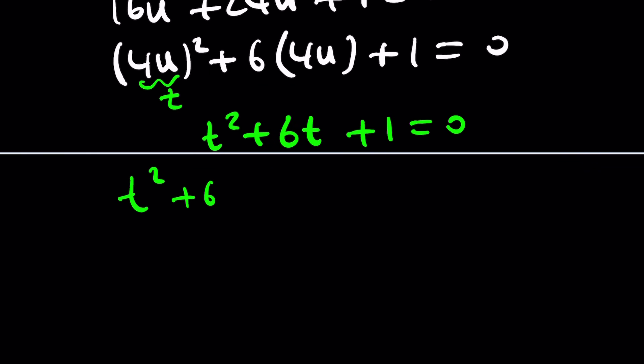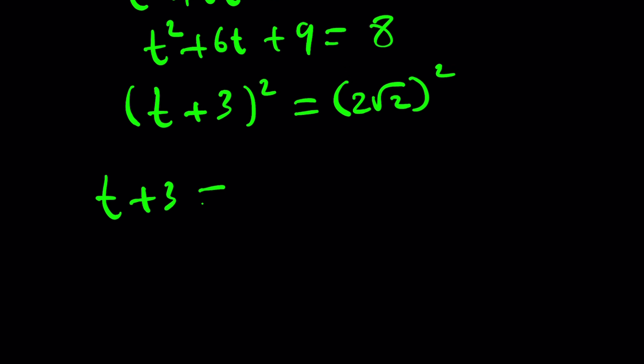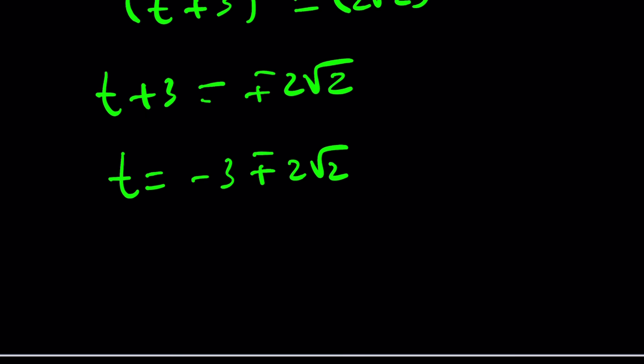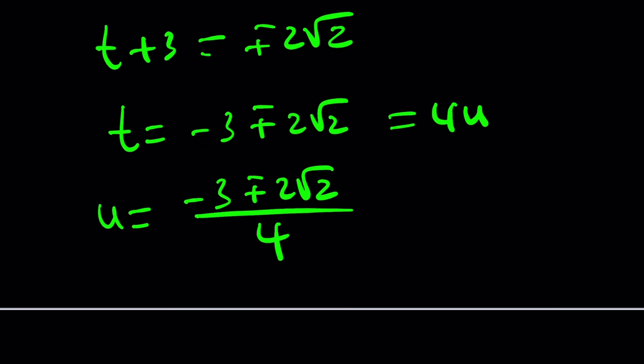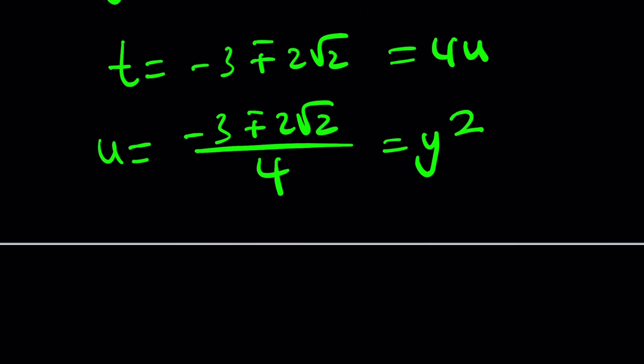You can isolate this and add nine to both sides to complete the square. This will become eight and this will become t plus three squared equals two root two squared. If you square root, we use the absolute value. You're going to get a plus minus two root two. Roots are going to be negative three plus minus two root two. Of course, t is four u. So t is four u. From here, we can find u, which is negative three plus minus two root two divided by four. But we're not looking for u. We're looking for other people.